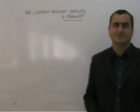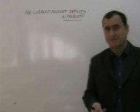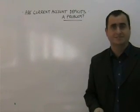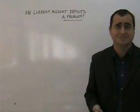Hello. Are current account deficits problems for countries? Britain has a current account deficit of about 2% of its GDP. The USA has a current account deficit of 7% of its GDP.